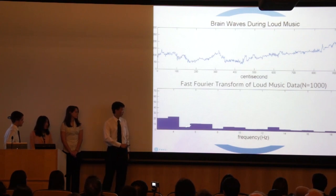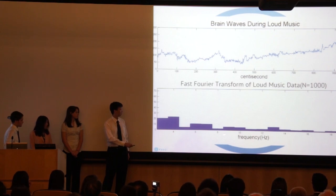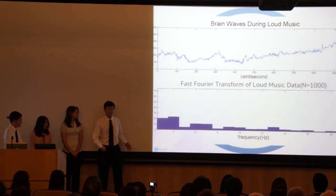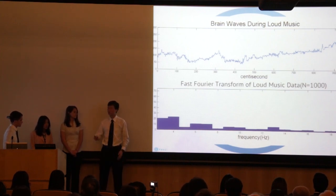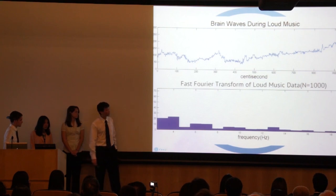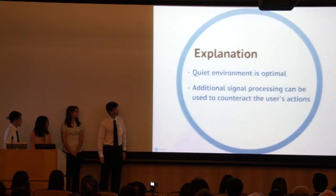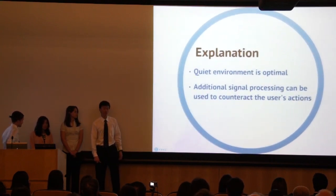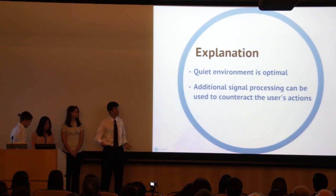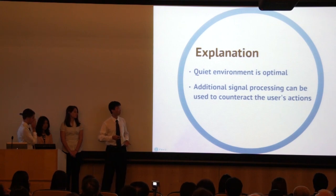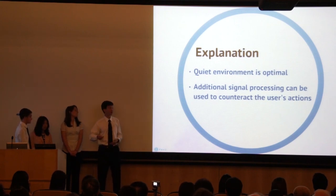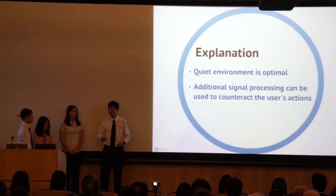We can also see a bulge in the 6 to 7 Hz range and another in the 9 to 10 Hz range. These bulges represent the different frequencies of the alpha and theta waves of the brain, which occur during deep thought and deep meditation. Thus, we can conclude that a quiet environment is optimal for using the BCI, as it allows the true brain signals to come through without extraneous factors affecting our data. We can also use additional signal processing to make our data more accurate.